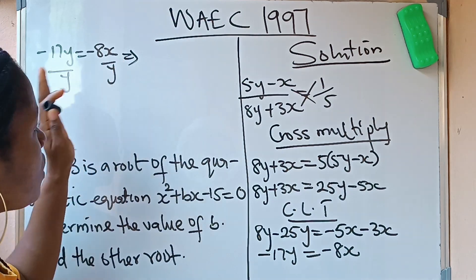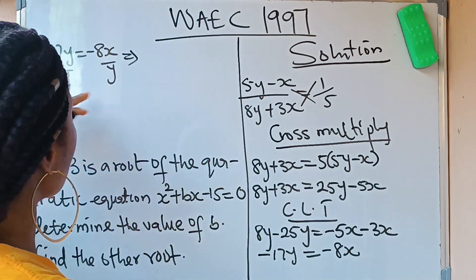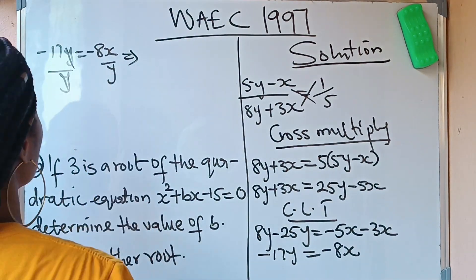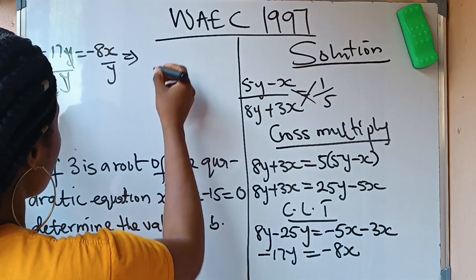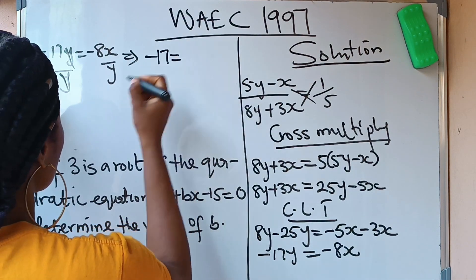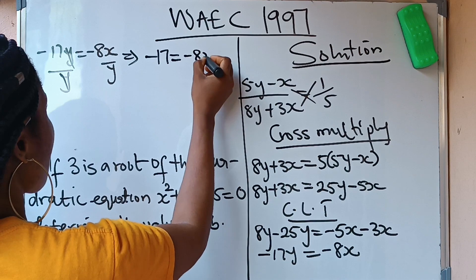So when I do that, this y will cancel this y. So we are left with -17 here. -17 = -8x/y.